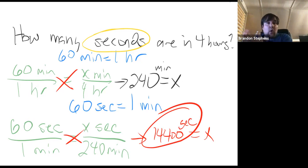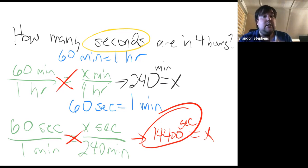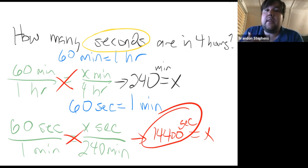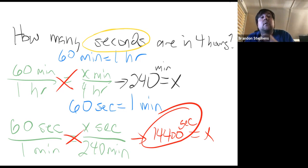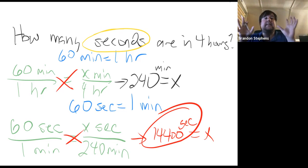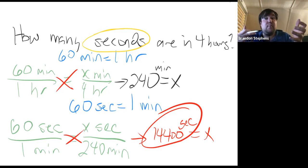So an alternate way of accomplishing the same thing is to use what's called dimensional analysis. A lot of the same techniques we used before are going to come in handy, but rather than setting it up as an equation, we're really going to be setting it up as a multiplication problem.